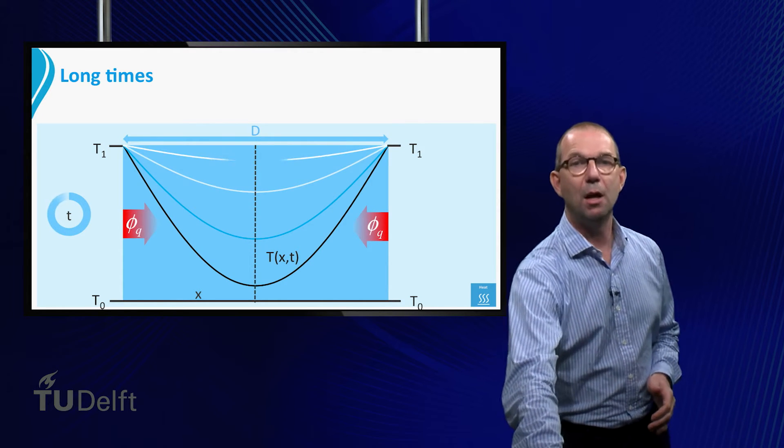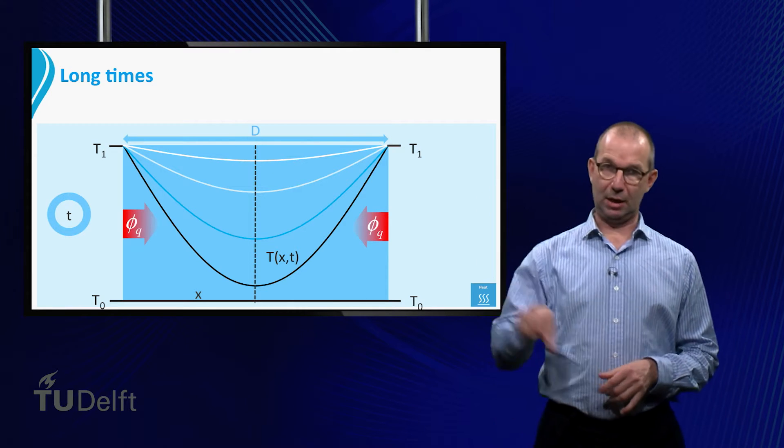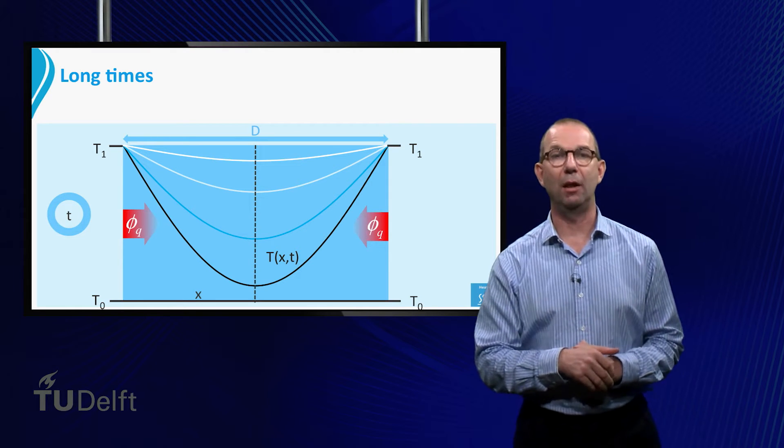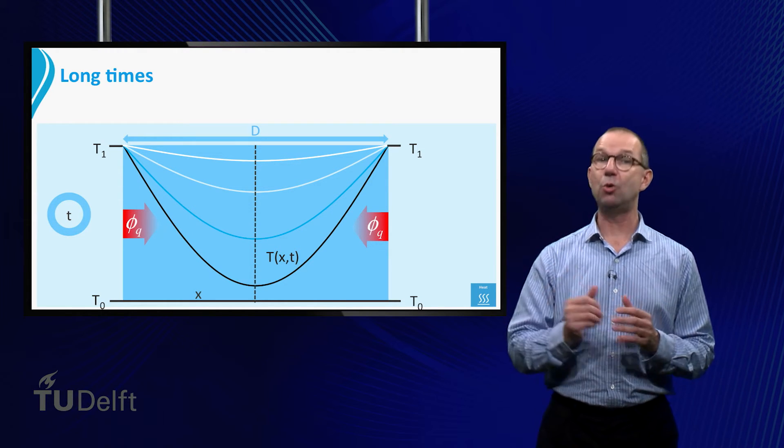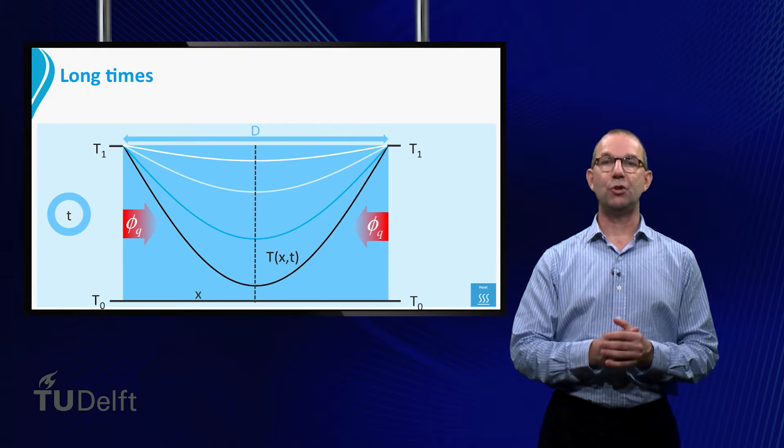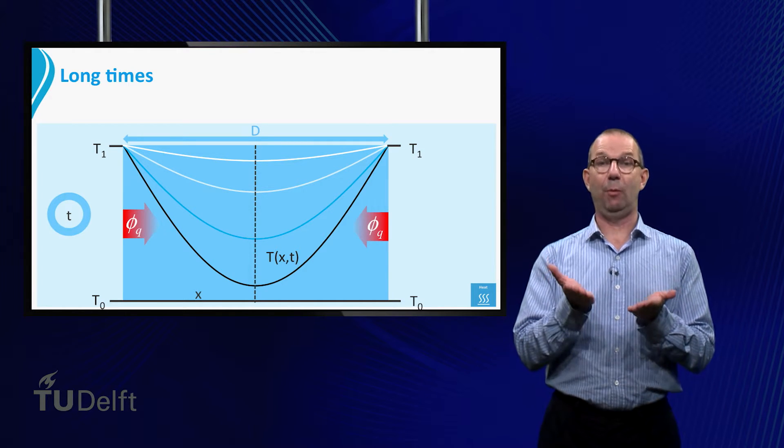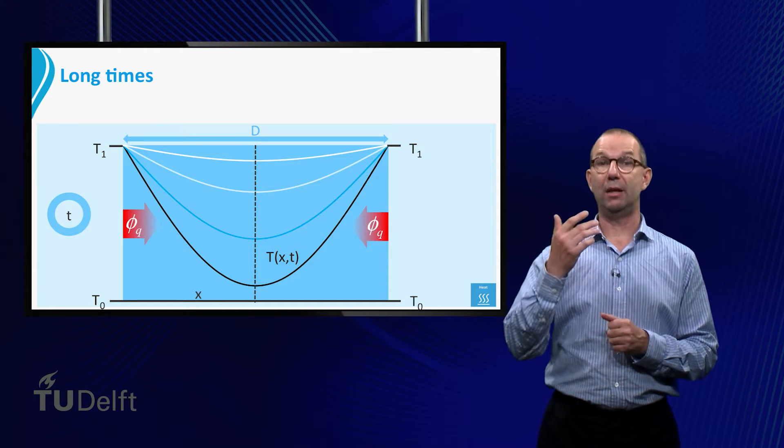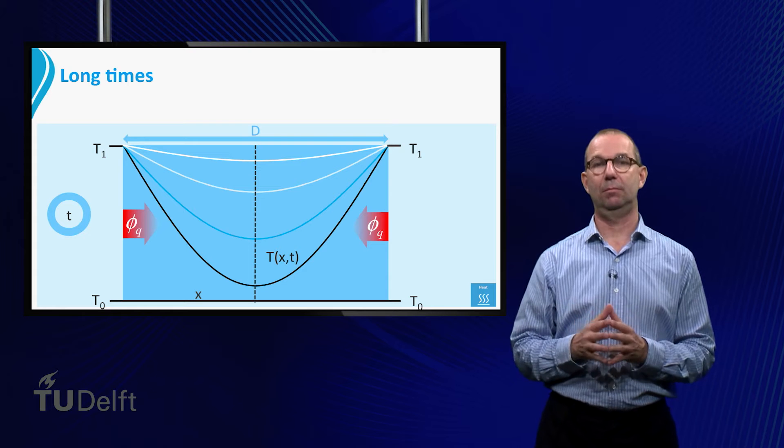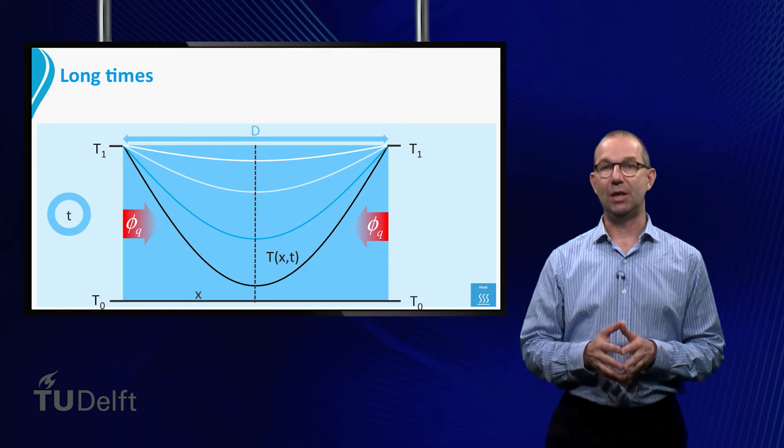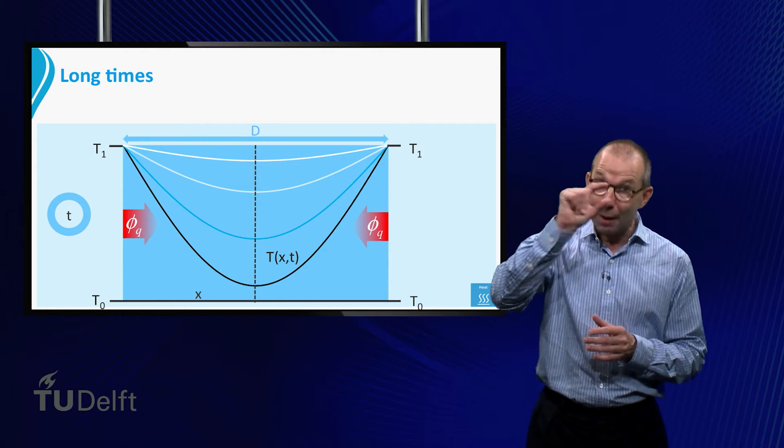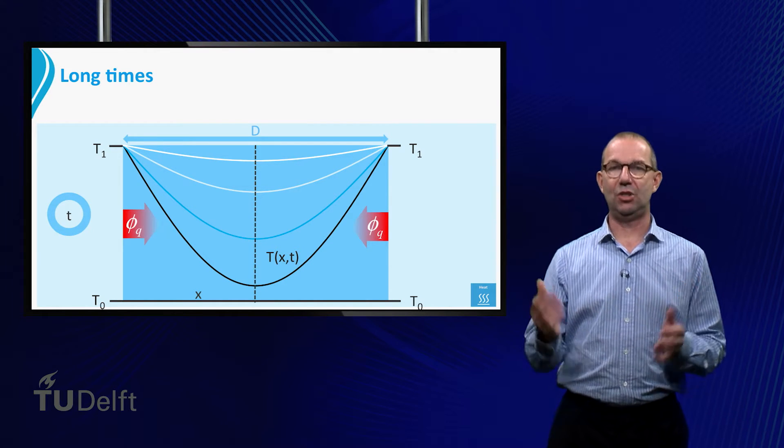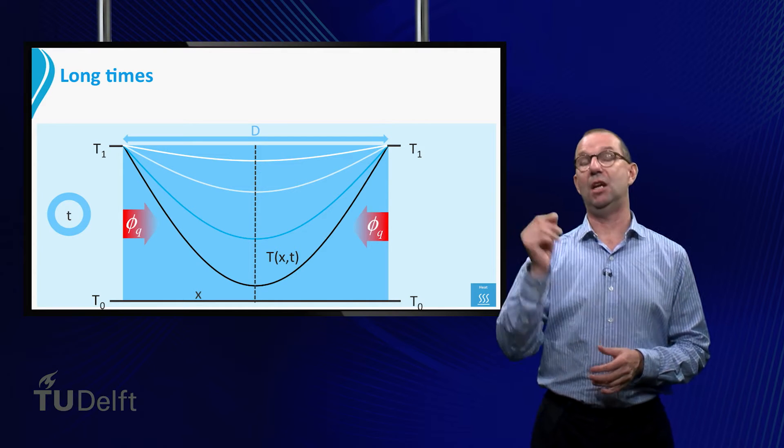The temperature profile looks much like a cosine. And indeed, if we would mathematically compute the temperature profile, we would see that it is cosine-like. If time progresses, the temperature rises everywhere. But as we see from the blue, the grey and finally the white line, it stays like a cosine, only at every instant with a smaller amplitude. Finally the amplitude is so small that we could say that the temperature of the entire plate is T1.